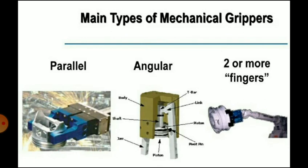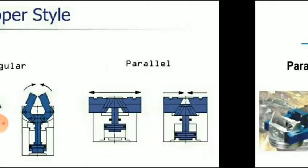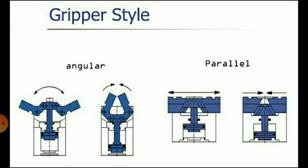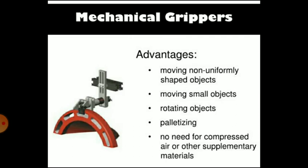Main types of mechanical grippers include parallel type, angular type, and those with two or more fingers. Gripper styles include angular and parallel. Advantages of mechanical grippers include moving non-uniformly shaped objects, moving small objects, rotating objects, palletizing, and no need for compressed air or supplementary materials.